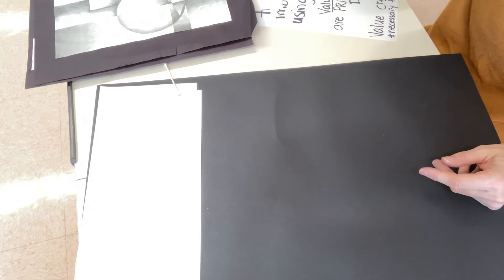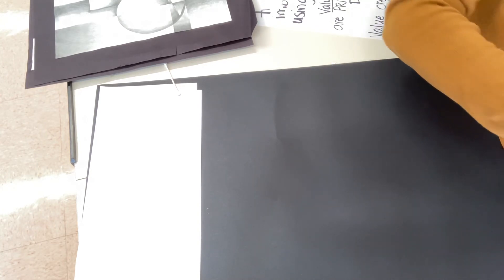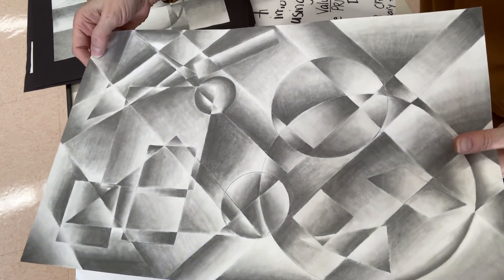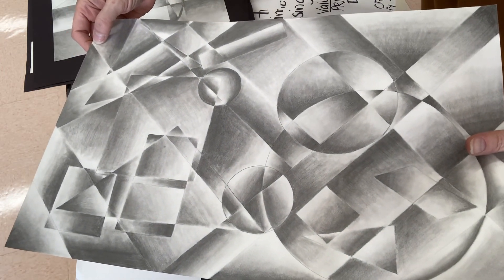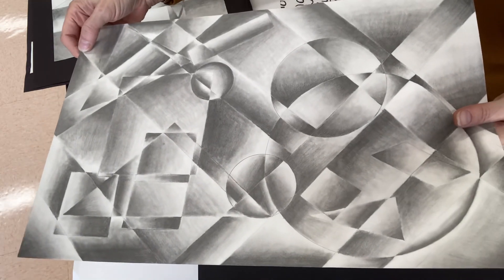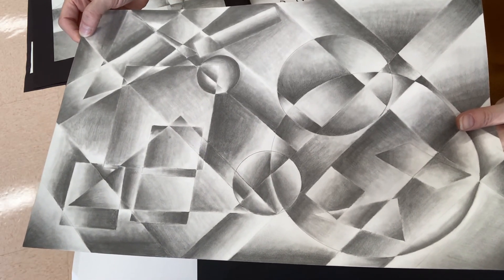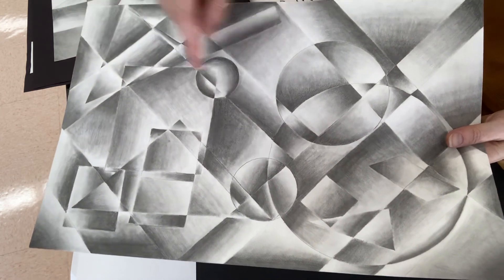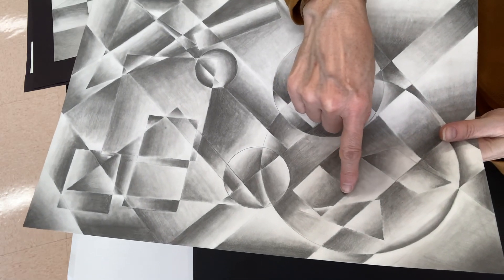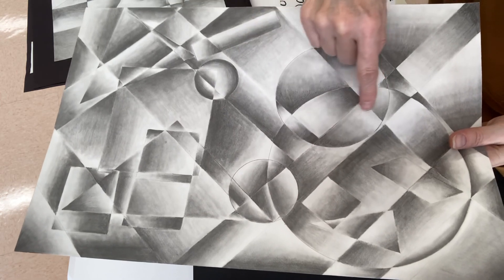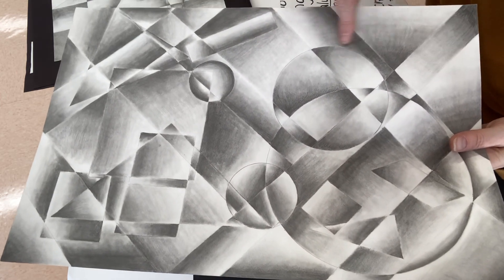So just to review, we're creating a design using shape and line that uses the entire piece of paper. Then using a pencil and no color, we are using pressure or smudging with a Q-tip or our finger or some other tool in order to create values from dark to light, and every single shape that we create from our overlapping.